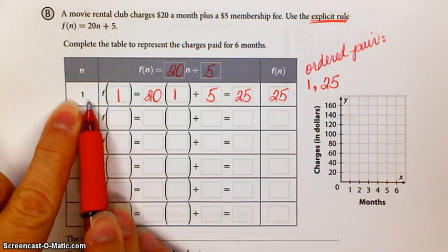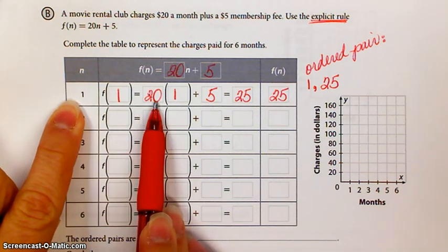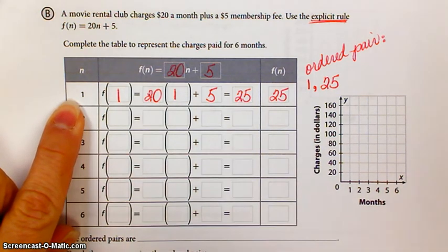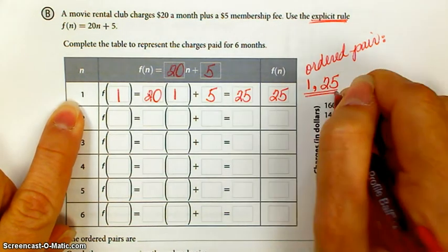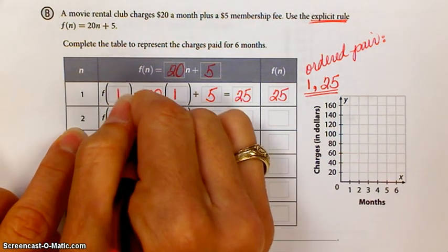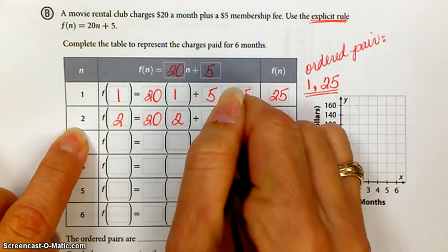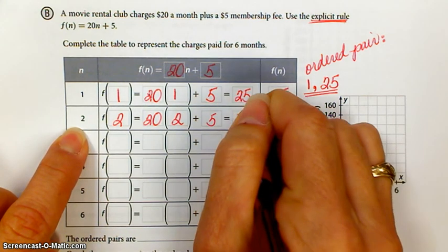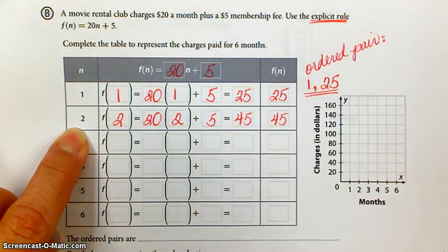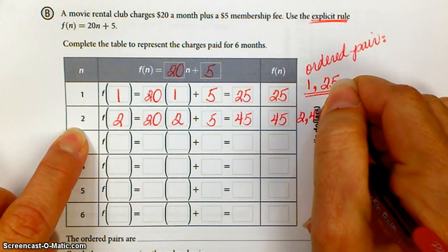So to get the first term in the sequence, that is f(1) is equal to 20. Your n is 1 plus 5 and that's 25. That generates an ordered pair of 1 comma 25. f(2) is 20 times 2 plus 5 and that is 45. So that generates an ordered pair of 2 comma 45.